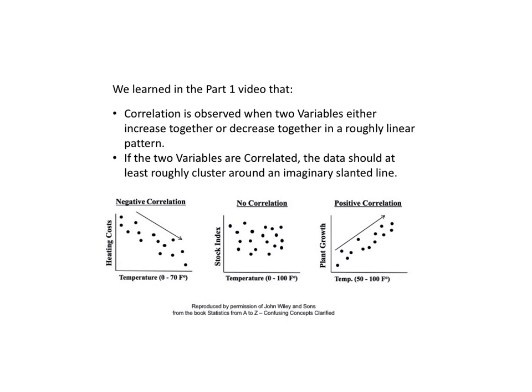If the two variables are correlated, the data should at least roughly cluster around an imaginary slanted line. The left and right diagrams here illustrate correlation. In the middle shows no correlation.